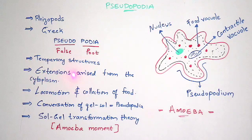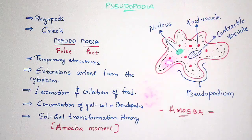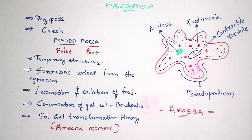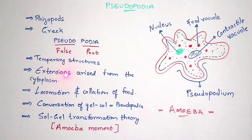Extensions are formed from the cytoplasm. Pseudopodia are the extensions of the amoeba. If you see here, this is the extension within the amoeba structure — there is a presence of Pseudopodium. From this amoeba, the Pseudopodium is extended out. That is nothing but the extension of Pseudopodium takes place from the cytoplasm of the amoeba. Pseudopodia is an extension which is mainly formed from the cytoplasm, and the best example is amoeba.